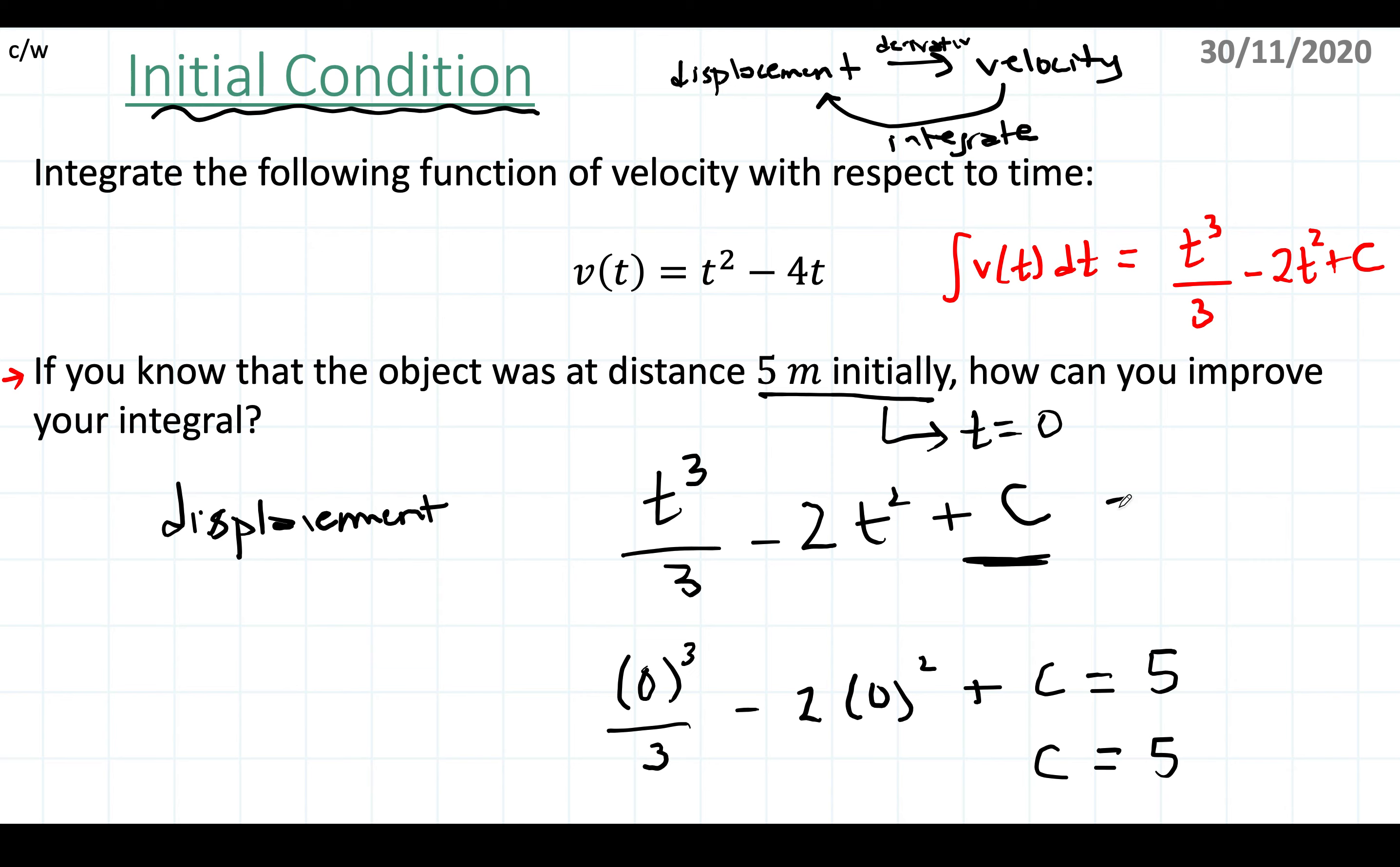So now I can actually improve my formula. I'm going to write the whole thing, but now it's more accurate than before, and it's plus 5. So now it's more accurate—there's no ambiguity whether it's a plus c or what the value of c is. There you go, we have the answer.